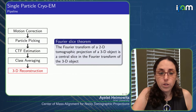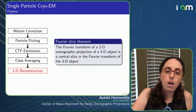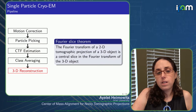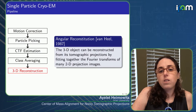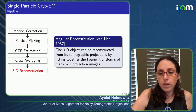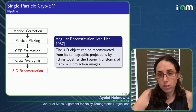For 3D reconstruction, we use the Fourier slice theorem, also known as the projection slice theorem, which tells us that the Fourier transform of tomographic projections are central slices in the 3D Fourier transform of the molecule. This gives us a method for reconstruction: we fill the entire 3D Fourier space with all our central slices to get our reconstruction.